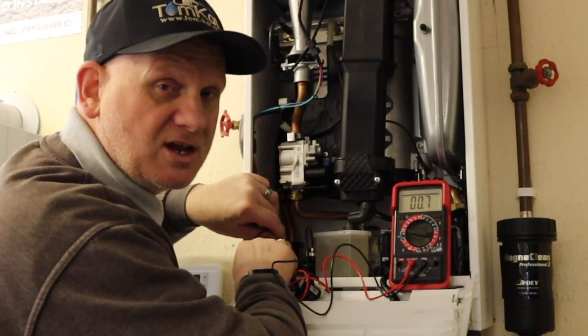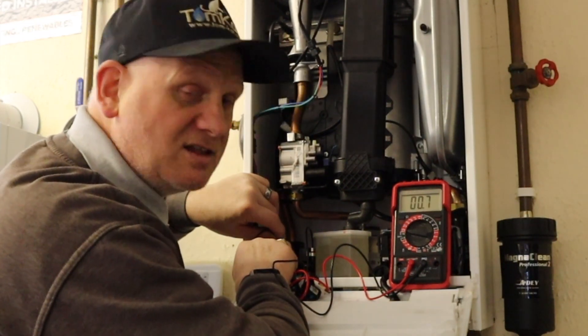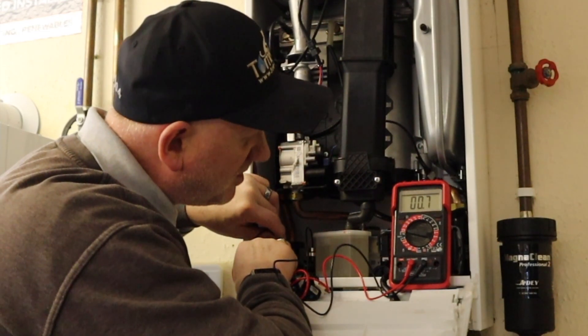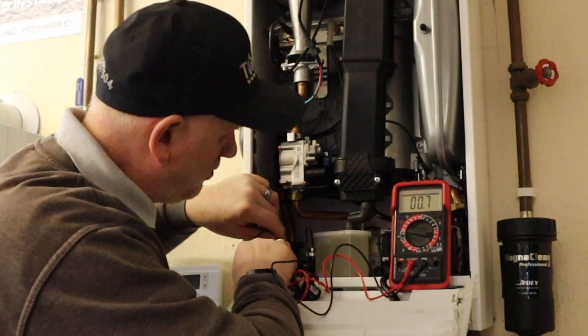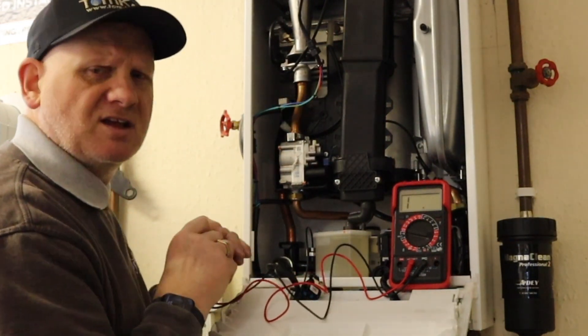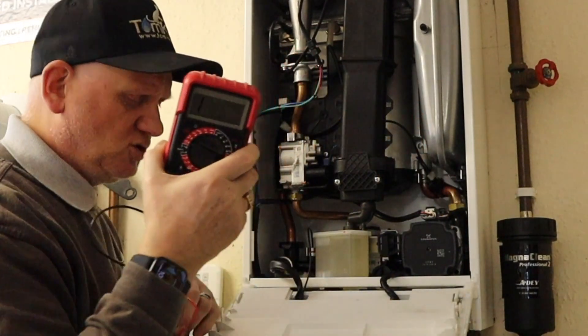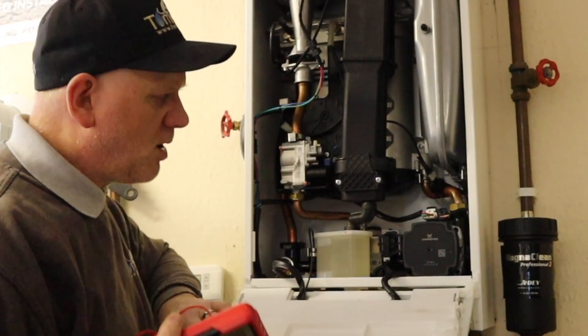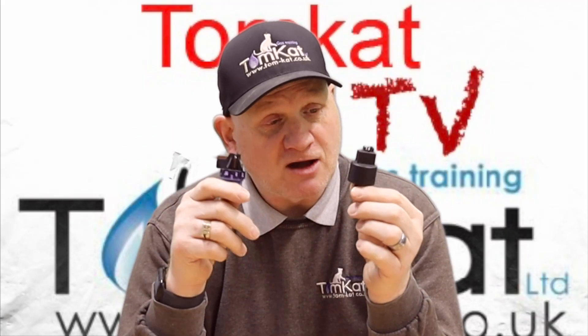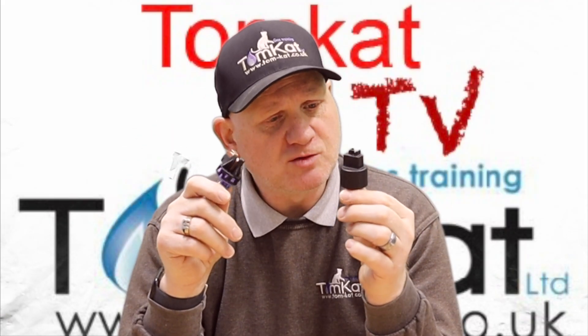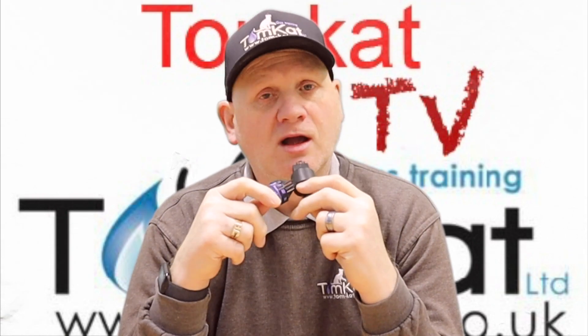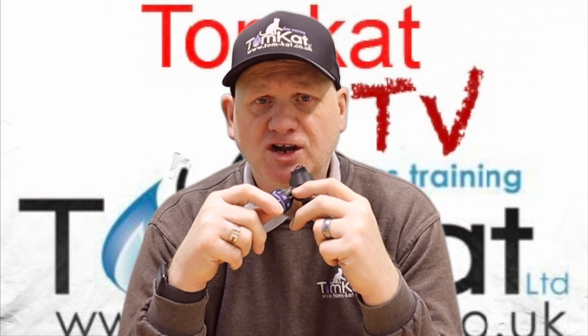There you go, we're getting a reading because the pressure is making the contact and we're reading 0.7 ohms. So that is telling the boiler that there's water in there. Let's see what pressure's in it. Should be around 1 bar, and it is just over 1 bar. Now that's how these two little devices work and how you test them. Hopefully you've liked this video and I'll catch you on the next one. Cheers.